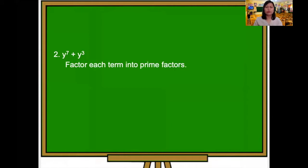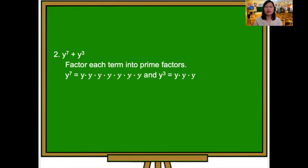Number two: factor y raised to the 7th plus y cubed. Factor each term into prime factors to determine the greatest common factor. For y raised to 7, we have y times y times y times y times y times y times y — seven factors of y. For y cubed, we have y times y times y — three factors of y.